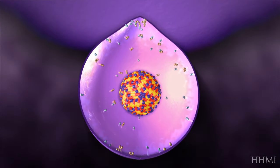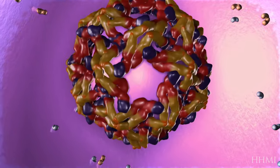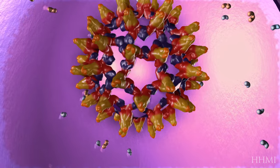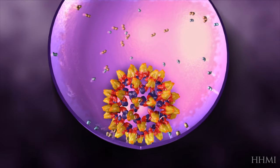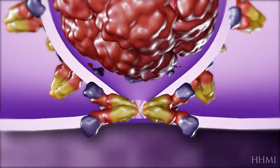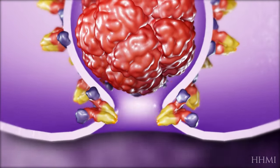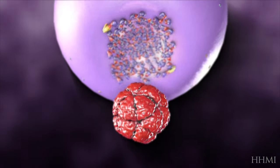The virus responds to the lowered pH by changing the conformation of the envelope proteins to form spike-like structures. The tips of the spikes are hydrophobic, which allows them to penetrate the endosome's membrane. They bend until the endosome's membrane and the virus's membrane fuse together and release the capsid into the cytoplasm.